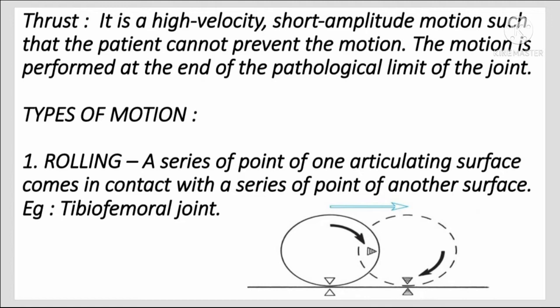Types of motion — first is rolling: a series of points on one articulating surface comes in contact with a series of points on another articulating surface, for example the tibiofemoral joint. As the ball moves forward, each successive point on one surface contacts a new point on the other surface — this sequential contact is called rolling.